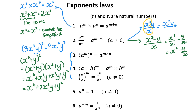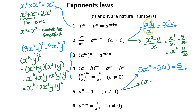Let's take a look at law 5. The only thing to be careful with law 5 is to take a look at where the exponent is. So here, if the exponent is only with the x, that means 5 times 1, which is 5. Be careful not to assume that the exponent applies to the whole term — it only applies to exactly what it's next to. And whether you're adding or subtracting, if the whole thing is to the power of 0, you're going to get 1.